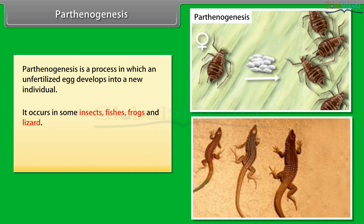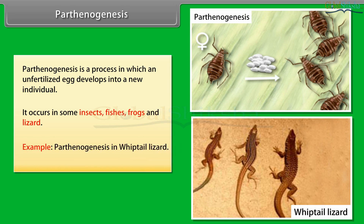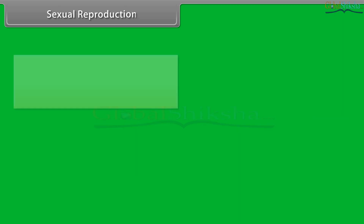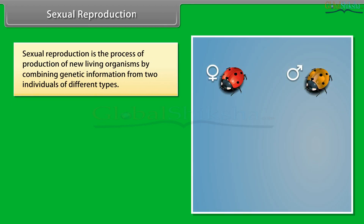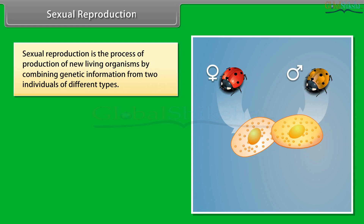Parthenogenesis is a process in which an unfertilized egg develops into a new individual. It occurs in some insects, fishes, frogs, and lizards. Example: parthenogenesis in whiptail lizard.